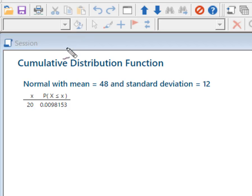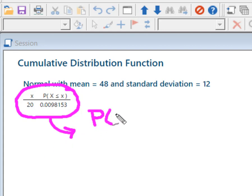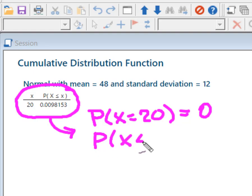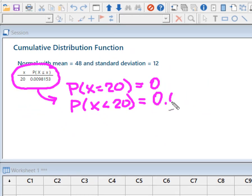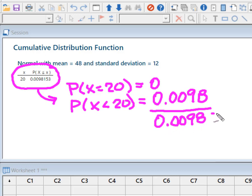You'll recall that we looked at that idea of what Minitab solves for us is that probability less than or equal to. So what it really solved was the probability that X is equal to 20 was 0. The probability that X is less than 20 is equal to this 0.0098. Probably four decimal places is enough. When it added those up together, that's how I got my non-zero probability 0.0098.